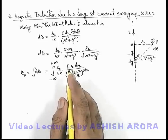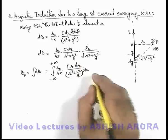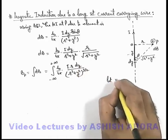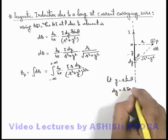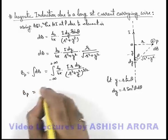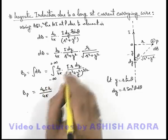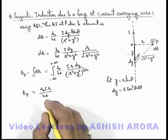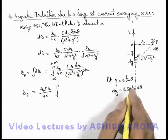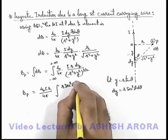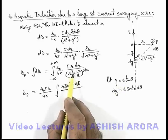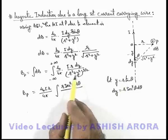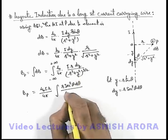To evaluate this integral, we substitute y = r·tanθ. Then dy = r·sec²θ·dθ. Substituting, the expression becomes (μ₀·i·r / 4π) taken as a constant outside the integral, and dy is written as r·sec²θ·dθ, divided by r²·(1 + tan²θ), which equals r²·sec²θ, raised to the power 3/2, giving r³·sec³θ.